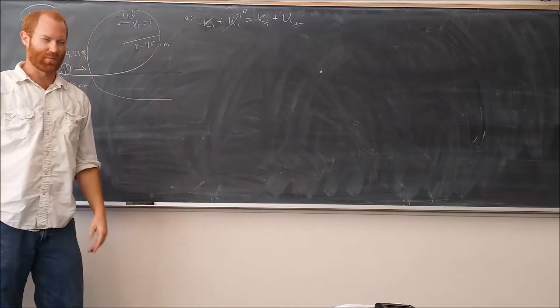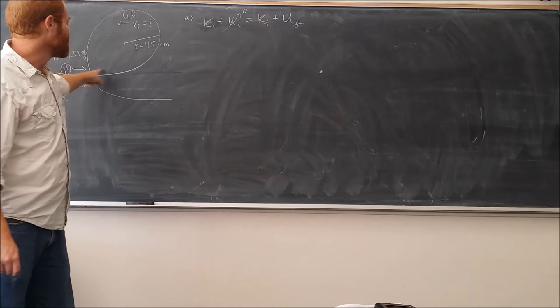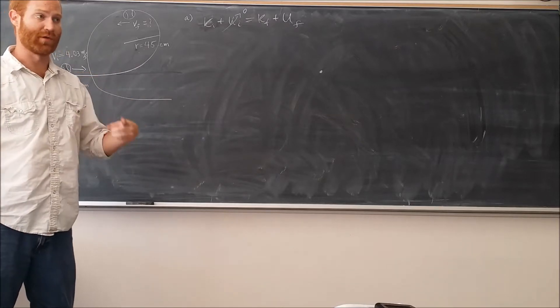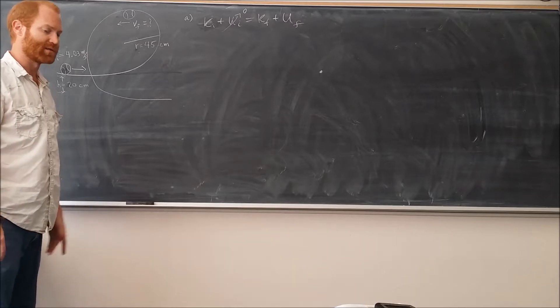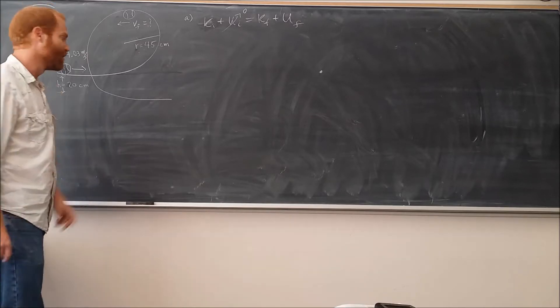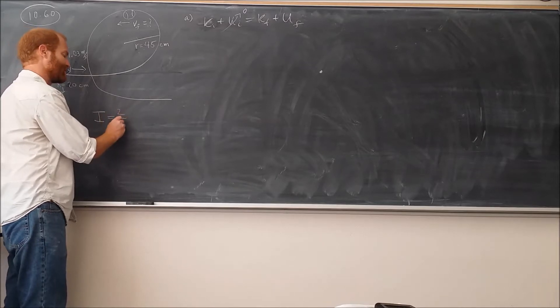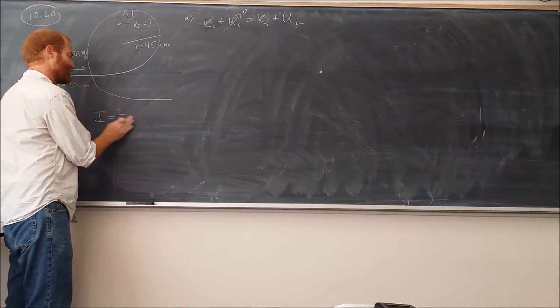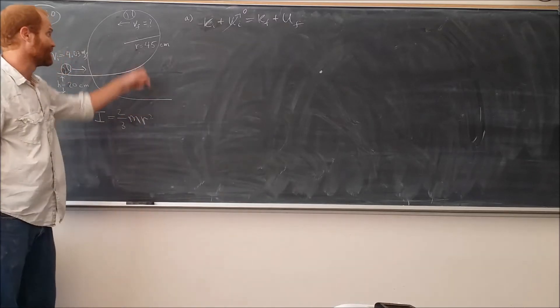The initial kinetic energy, in order to understand what that is, we have to realize that if the ball is not slipping, it's going to be translating in this direction, but it's also going to be rolling. So we need to know what the moment of inertia of this object is. It tells us in the problem that the ball is a hollow sphere. So we can say that the moment of inertia as we look at one of those tables is 2/3 times the mass of the ball times its radius squared.